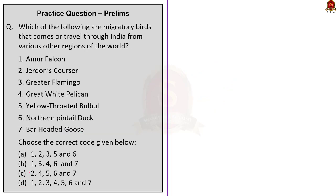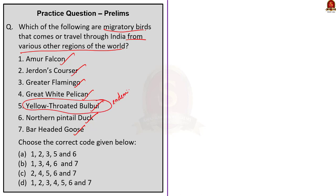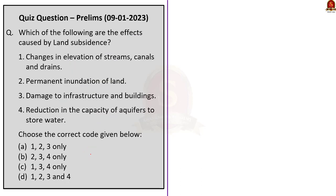Fourth question: Which of the following are migratory birds that travel through India — Amur falcon, Jordan's causer, greater flamingo, great white pelican, yellow-throated bulbul, northern pintail duck, bar-headed goose? If you find out that yellow-throated bulbul is an endemic species to India, you can easily arrive at the correct answer which is option B: 1, 2, 4, 6 and 7 only. The fifth question is a quiz question for aspirants — pause the video, think for a moment and post your answer in the comment section.